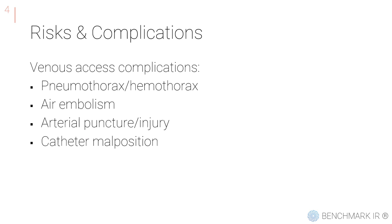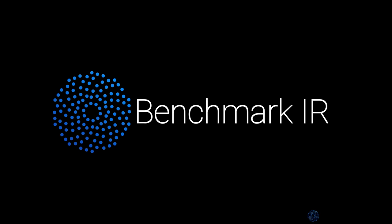As a brief introduction to complications, which will be discussed in a separate video, venous access can come with complications of pneumothorax, hemothorax, air embolism, vessel injury, or complications arising from catheter malposition. And with that, thanks for watching Central Venous Principles by Benchmark IR.